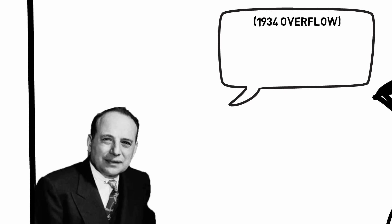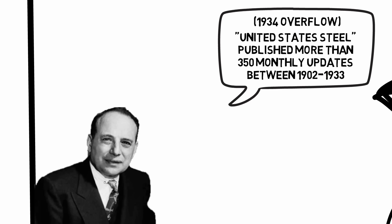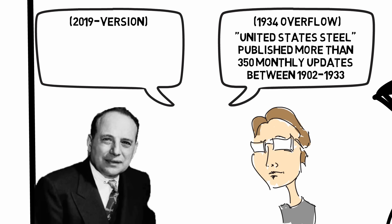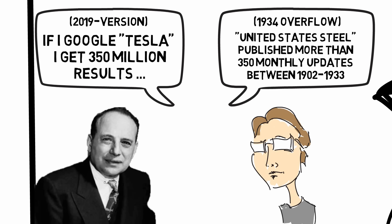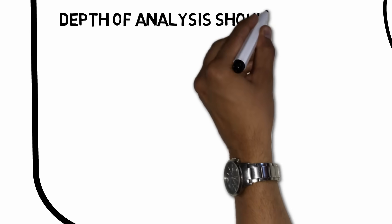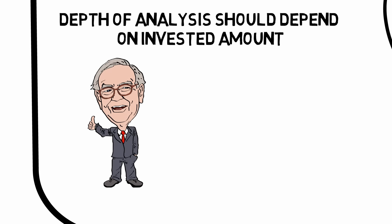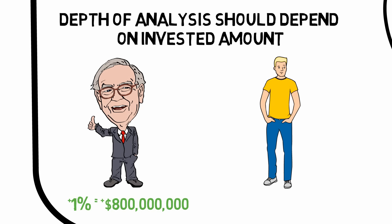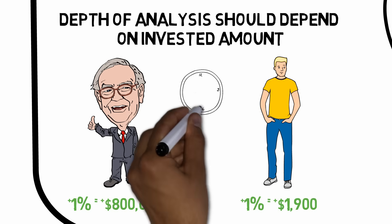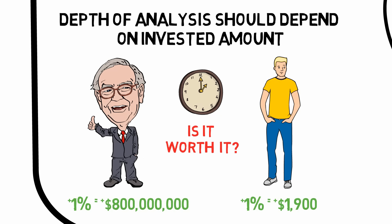The issue is that already in Graham's days, the supply of information of a single security was typically more than an analyst could plow through. And Graham only lived to see the very beginning of the information age. The supply of information has increased exponentially during the last decades. Needless to say, an investor can only consume so much of it. The depth of his analysis should therefore depend on his invested amount, as that is a good indicator of how much value additional analysis can add. If Warren Buffett can increase his yearly returns by 1%, that would mean about $800 million more in income that year. If the average Swede can increase his return by the same percentage, he will only increase his income by approximately $1900. Depending on how much time he must invest to achieve that extra return, it may or may not be time well spent.